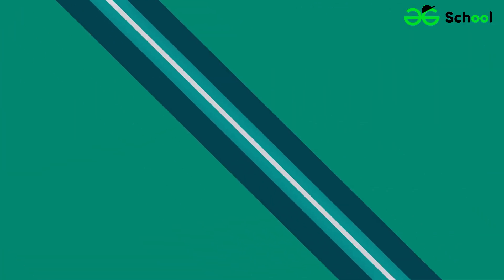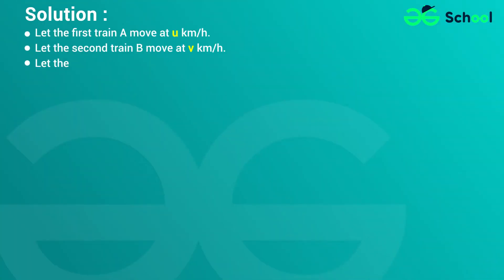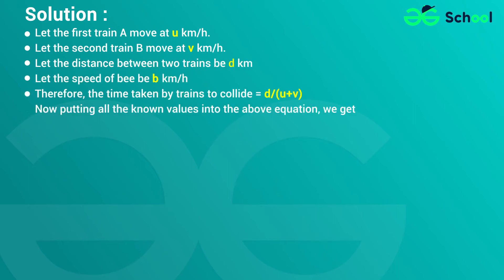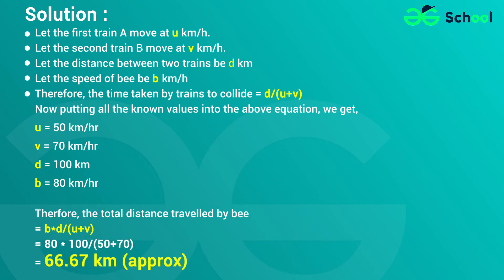Solution: Let the first train A move at U km per hour. Let the second train B move at V km per hour. Let the distance between the two trains be D km.